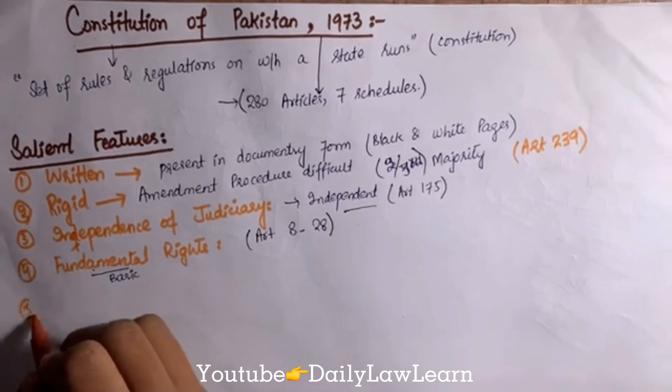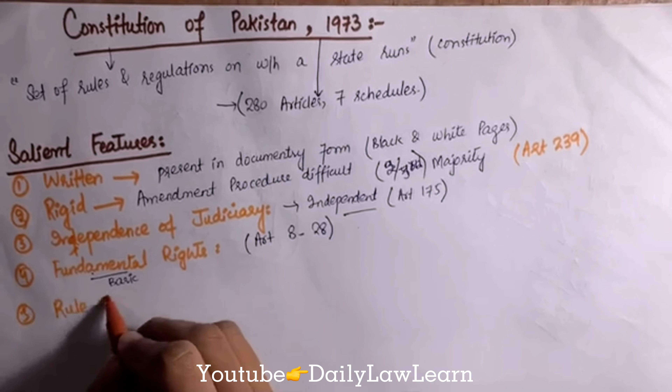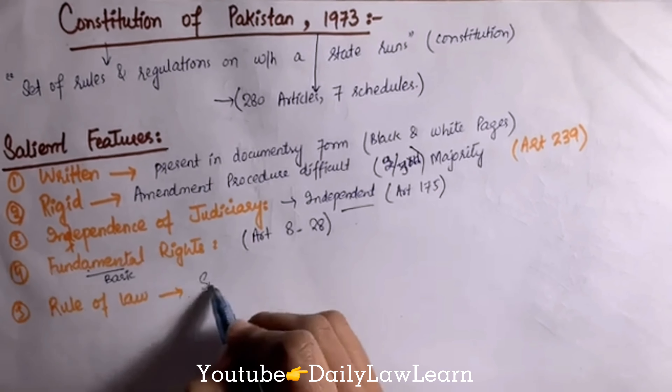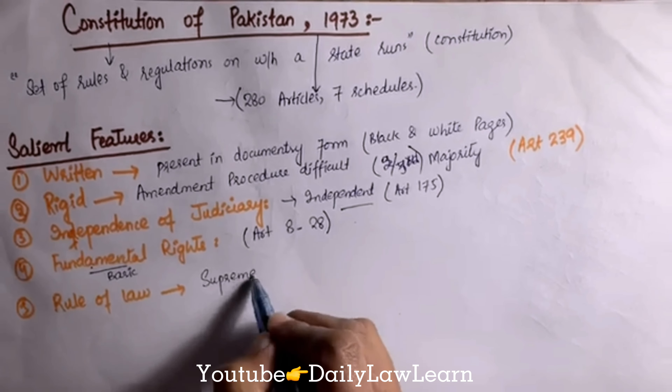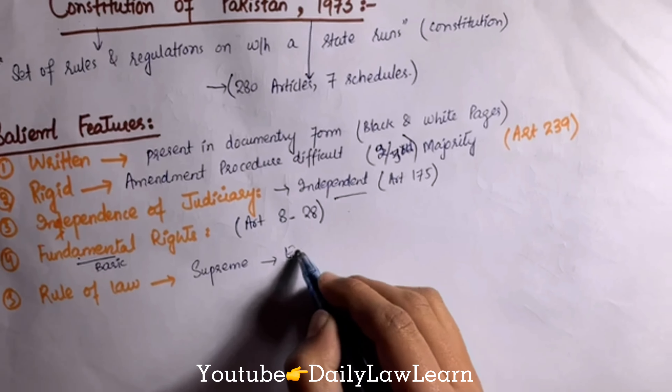Number four is fundamental rights — basic rights which are provided under Articles 8 to 28 of the Constitution of Pakistan 1973.